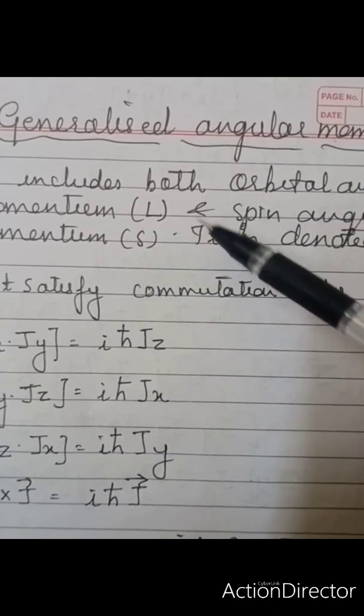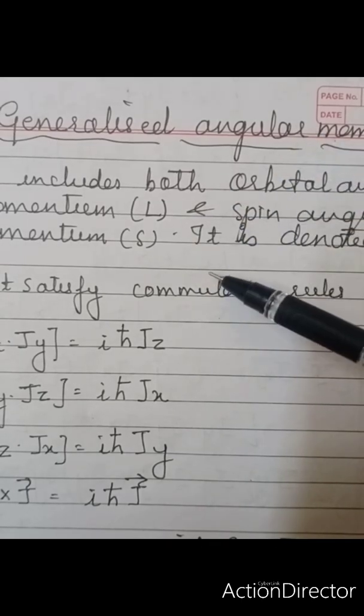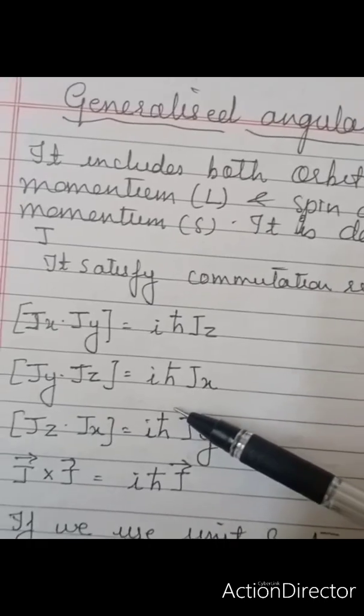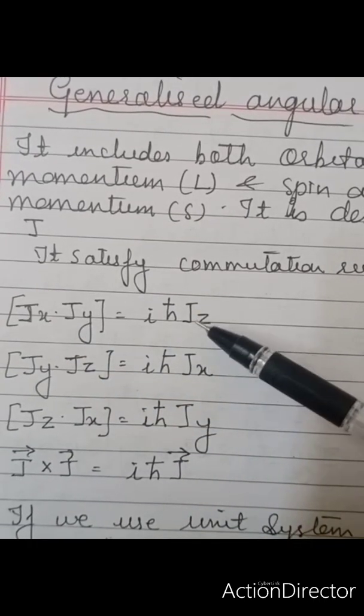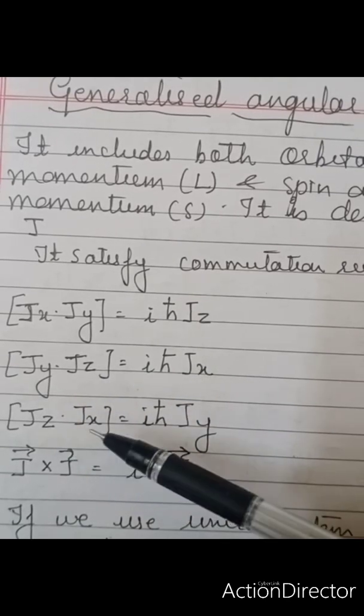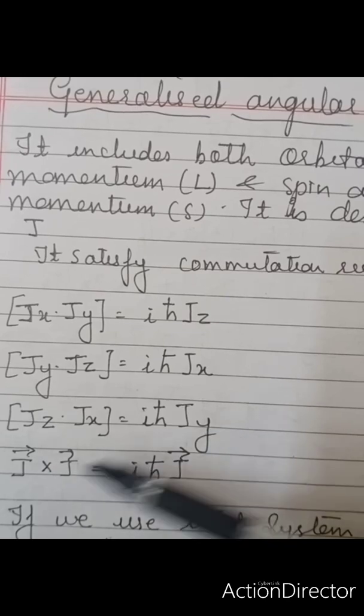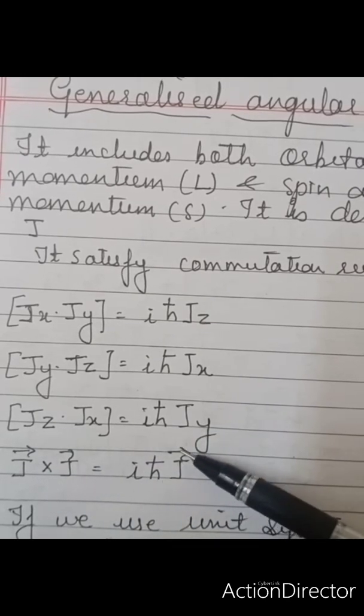This J should satisfy the commutation rules for generalized angular momentum. These commutation rules are: JX JY equals iℏ cut JZ. And when it is YZ, here it will be JX. When it is ZX, here it will be JY. And J into J that will be iℏ cut J vector.